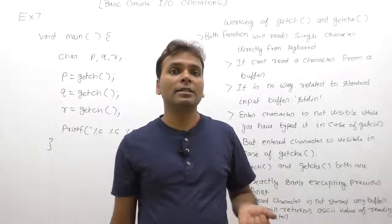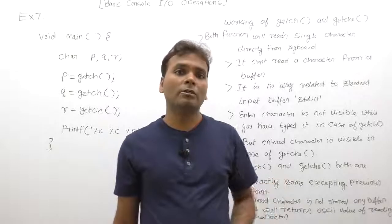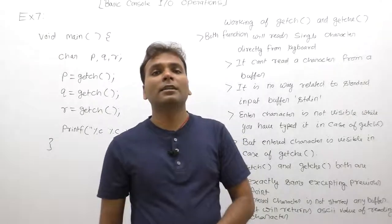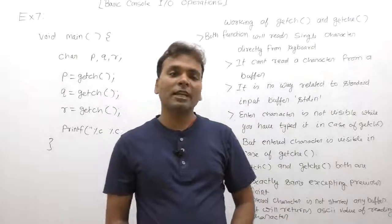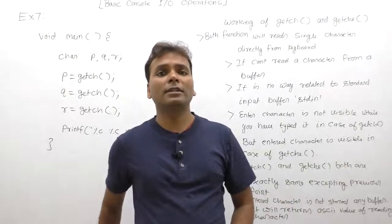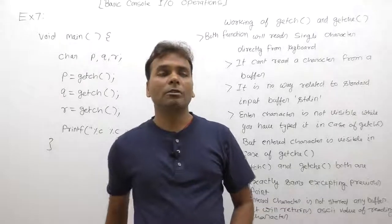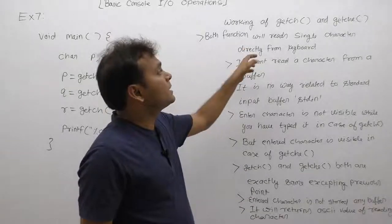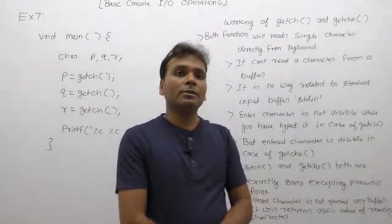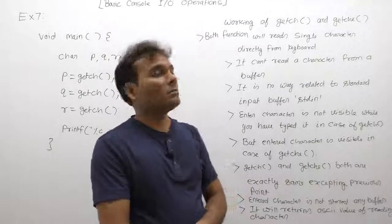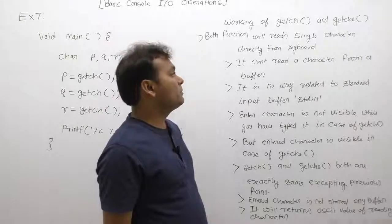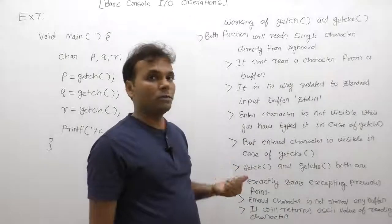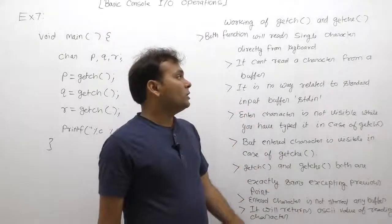The first key input from keyboard is immediately and automatically read using getch and getche functions, without waiting for the enter key, and without waiting for entering a second character. In the previous case, at a time one or more characters could be input, but in the case of getch and getche, only a single character can be entered at a time. Both functions read a single character directly from the keyboard and cannot read a character from a buffer.